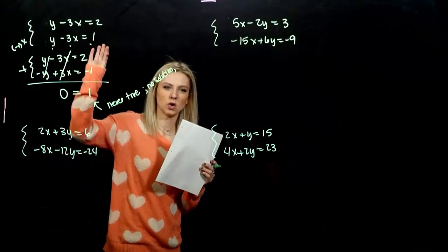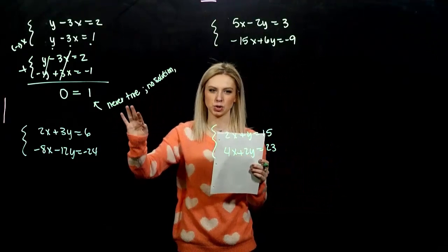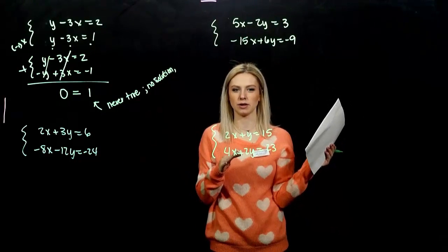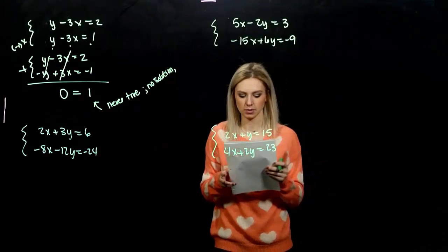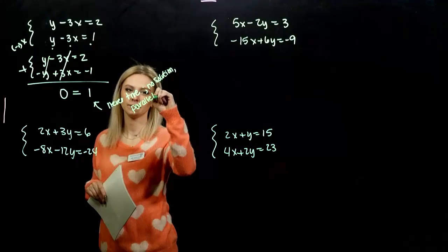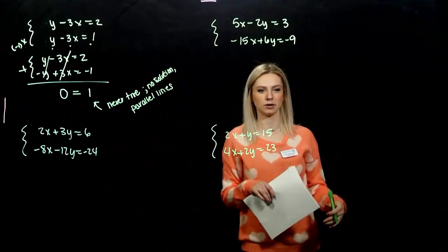And what kind of lines are those, then? If we come down to a statement that's never true, there's no solution to the system. What does the picture look like? They're never touching. They never have an intersection point. So, we're dealing with parallel lines. They have same slope, different y-intercepts.